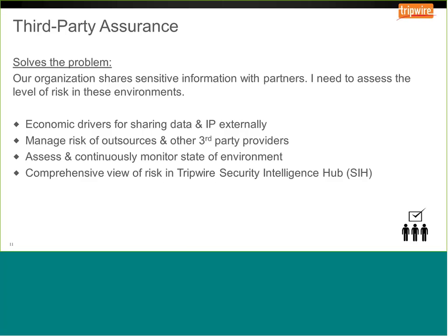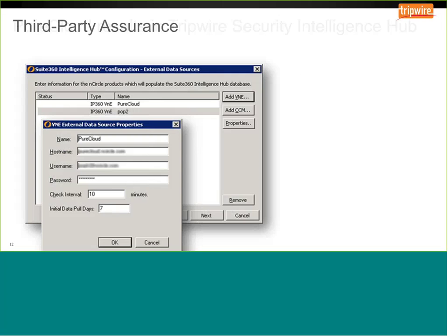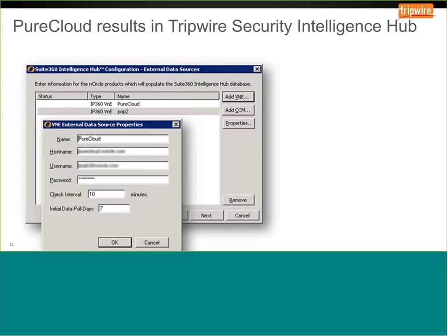There is the ability to incorporate results from Pure Cloud into Tripwire SIH (Security Intelligence Hub). An SIH administrator can set this up by creating a new user account provisioned exclusively for integrating with SIH. On the machine where SIH is installed, locate the Tripwire Security Intelligence Hub configuration wizard. On the external data source configuration page, select V&E in the dropdown, then enable the Pure Cloud integration — that'll pull the data in from Pure Cloud for use in your SIH reports.